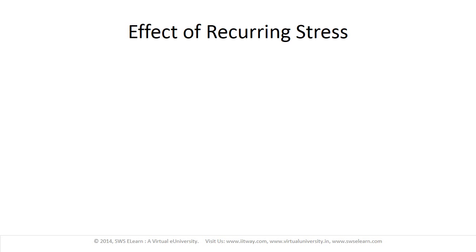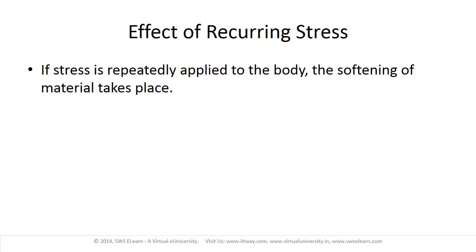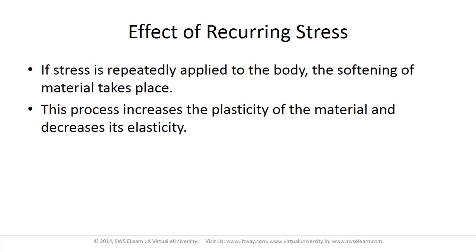The last effect we will study is recurring stress. If stress is repeatedly applied to the body, softening of the material takes place. This process increases the plasticity of the material and decreases its elasticity.